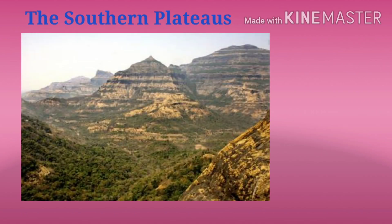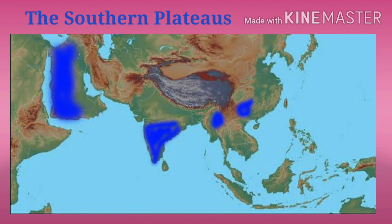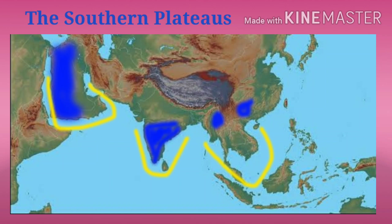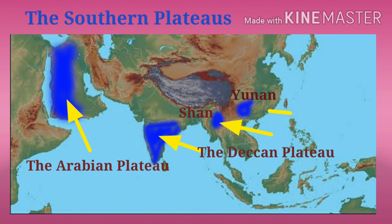The first one is the Southern Plateaus. In the Southern part of Asia, there are three plateaus in the form of Peninsula, which are referred to as the Southern Plateaus. Peninsula basically refers to a piece of land which is surrounded by water on three sides. The three Southern Plateaus are the Arabian Plateau, the Deccan Plateau and the Plateau of Shan and Yunnan.